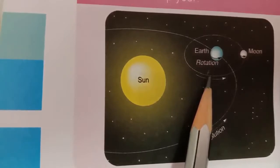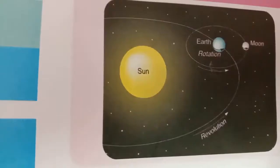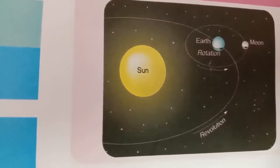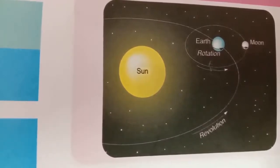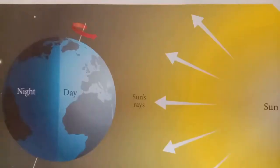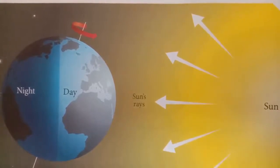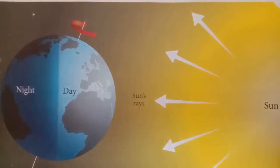The earth spins on its own axis — this movement is called rotation. As the earth rotates, some parts of the earth are exposed to the sun while the rest are away from the sun. This is how the movement of the earth brings about day and night. The part of the earth on which the light of the sun falls experiences day, and the part that is dark and away from the sun experiences night. From the earth, we can observe that the sun rises in the east and sets in the west.